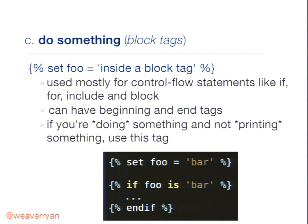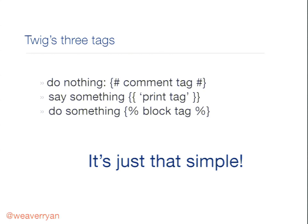Some do-something tags have end tags and some don't. The 'set' tag is just curly-percent set — no closing tag. The 'if' tag has an opening if and a closing endif. The big takeaway: three tags. One does nothing (comments). One prints things. The third does things, but there are only about five do-something tags you'll really care about.